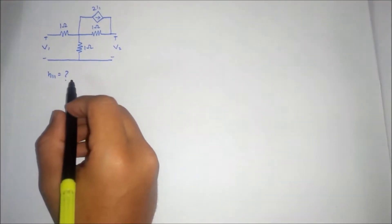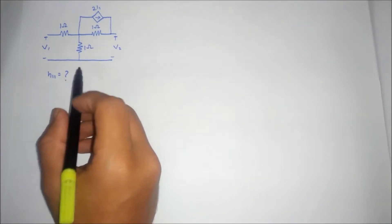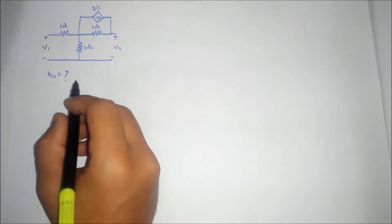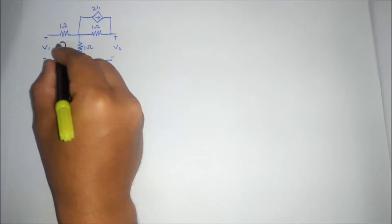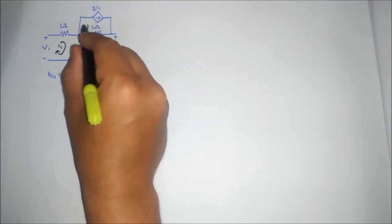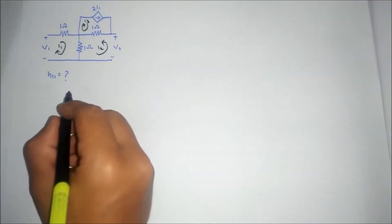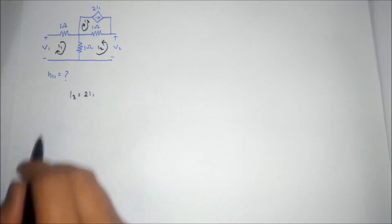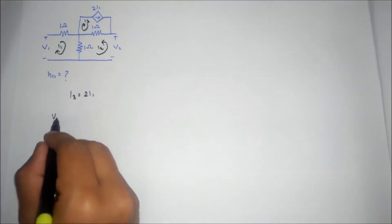This question is asked in GATE exam 2018. A circuit is given and we have to find H11. We will first identify the loops: the first is I1, the second is I2, and the third is I3. We can see that I3 is equal to 2I1.